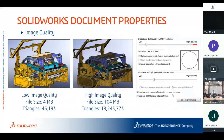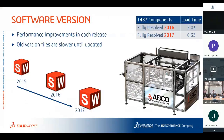To illustrate the image quality impact: at low image quality, a part is about 4 megabytes with 46,000 triangles; at high image quality, it's 104 megabytes with 18 million triangles. You have to ask yourself whether that's really worth it. The Performance Evaluation tool also reports image quality so you can see it without hunting through every part individually.